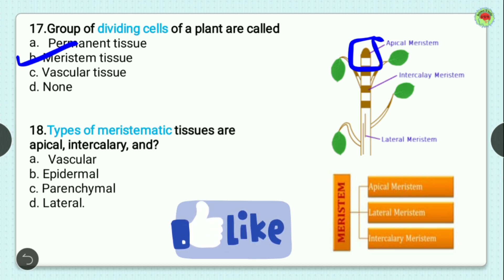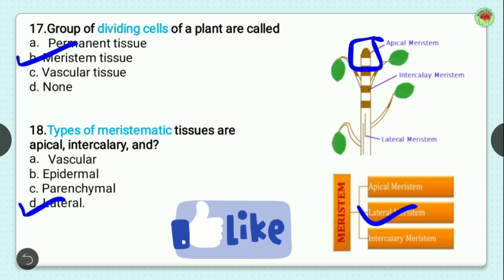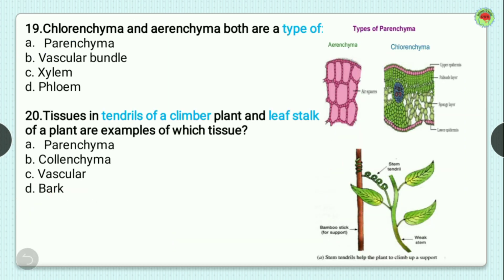Question 18: types of meristematic tissues are apical, lateral — which we have just discussed — so the lateral meristem is the correct answer for question 18. Question 19: chlorenchyma and aerenchyma are both types of? These are types of parenchyma, as discussed in the previous video. So the correct option is A, parenchyma.